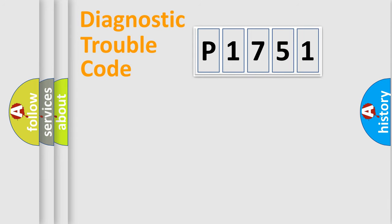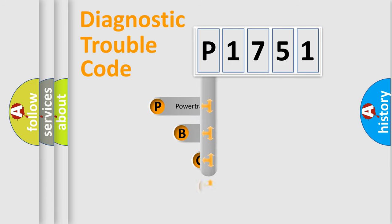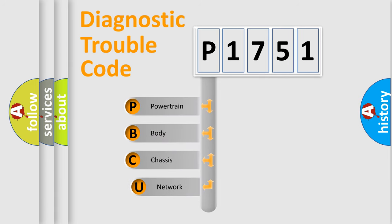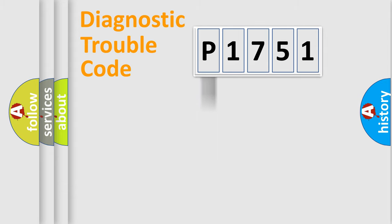First, let's look at the history of diagnostic fault code composition according to the OBD2 protocol, which is unified for all automakers since 2000. We divide the electric system of the automobile into four basic units: Powertrain, body, chassis, and network.